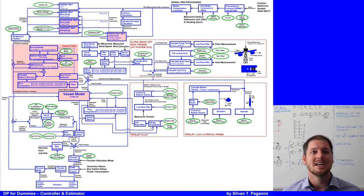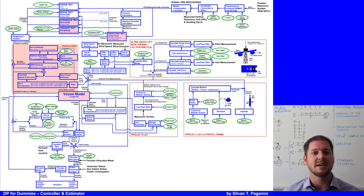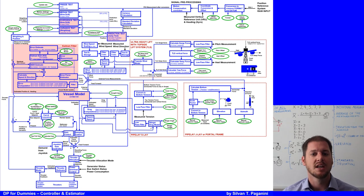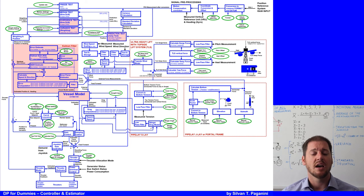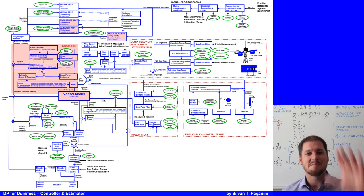So that's all for now. I hope you now understand more about the controller and the estimator — the vessel model. Remember, this DP block diagram is still simplified and shows only one possible implementation. Thank you very much for watching. See you next time. Bye!